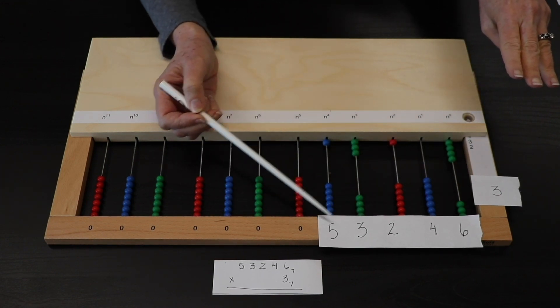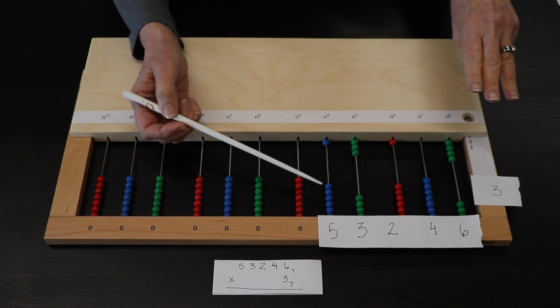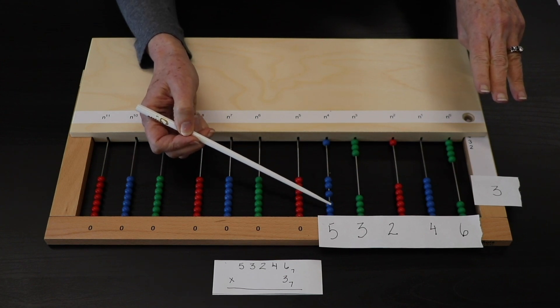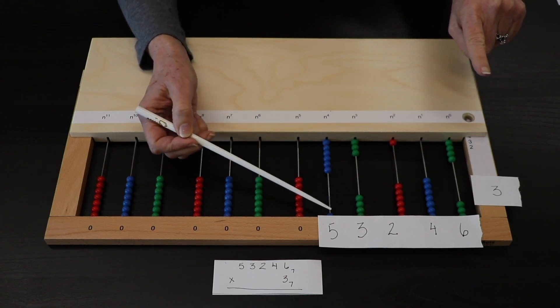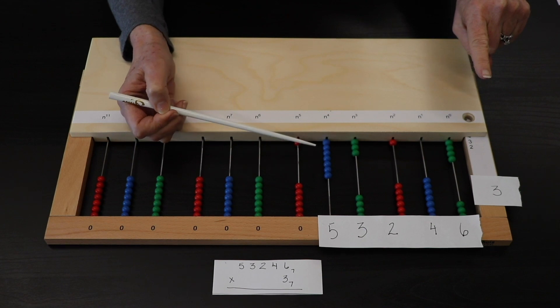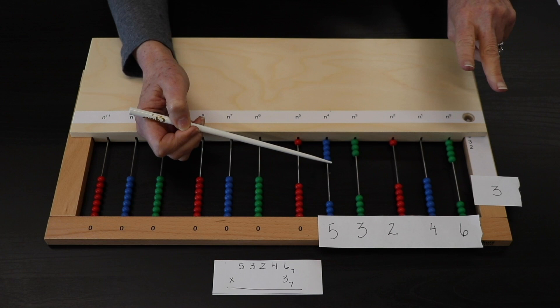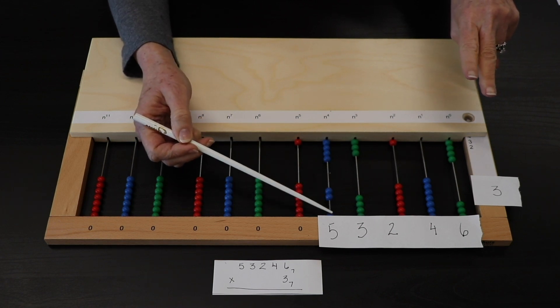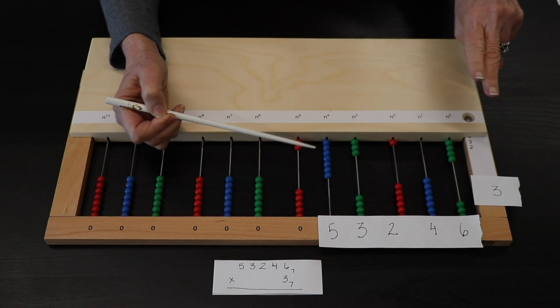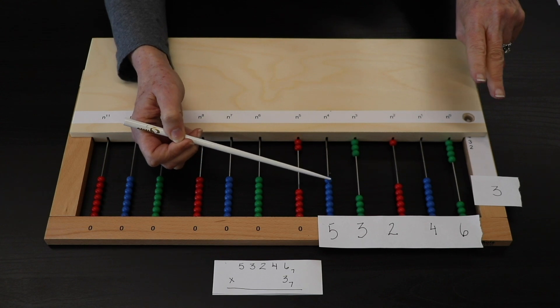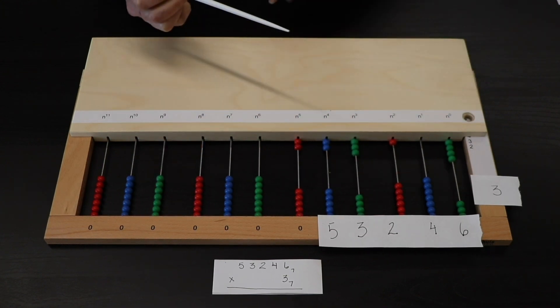A set of 3, taken 3 times. And then finally, a set of 5, taken 3 times. 1, 2, 3, 4, 5, taken once. 1, 2, 3, 4, 5, taken twice. 1, 2, 3, 4, 5, taken 3 times.